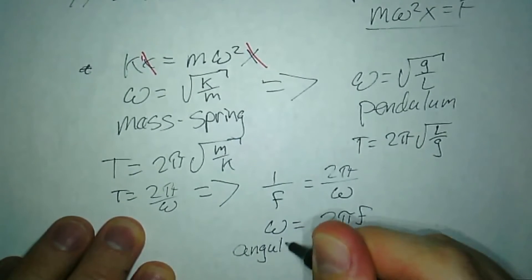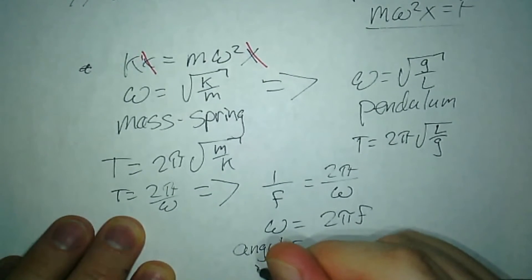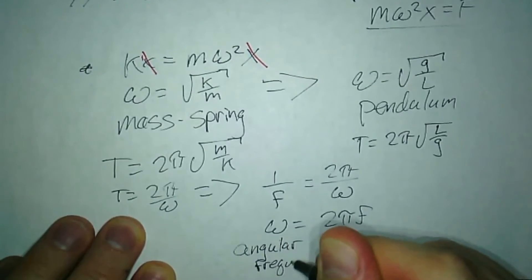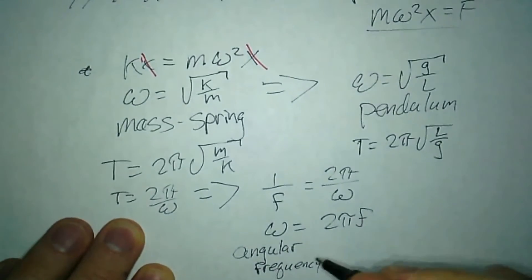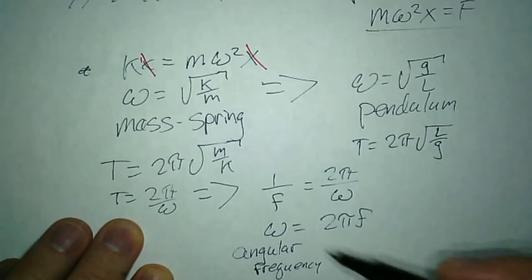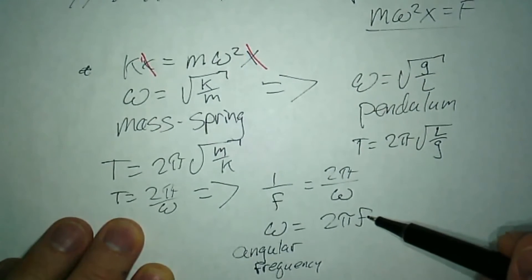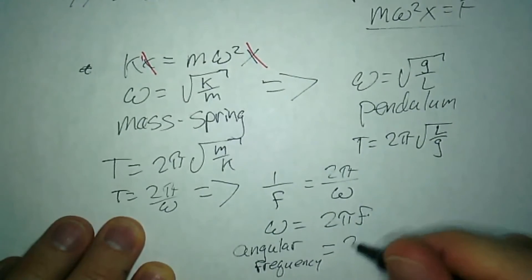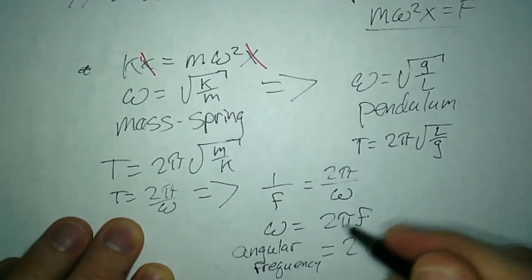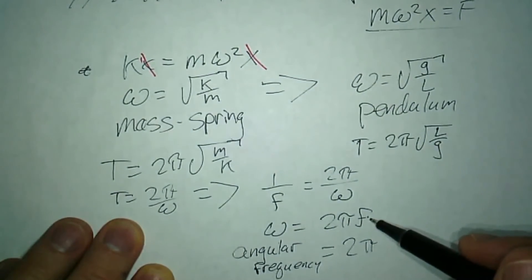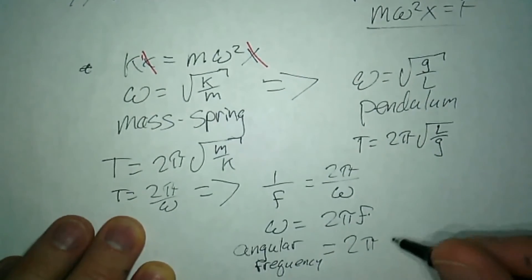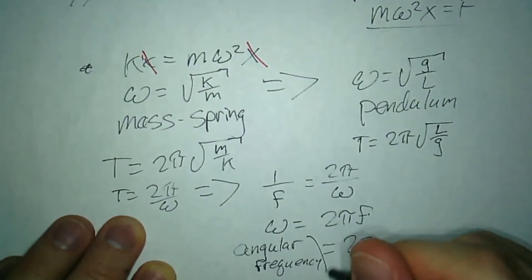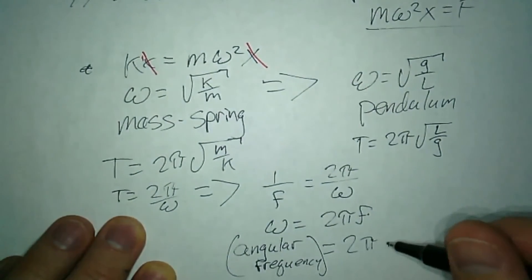Which makes sense - frequency is cycles per second, and ω is radians per second. One cycle is 2π radians, so to convert, I multiply by 2π.